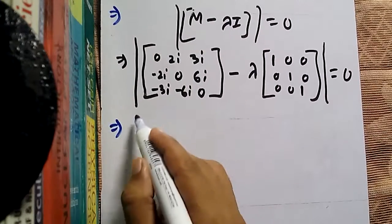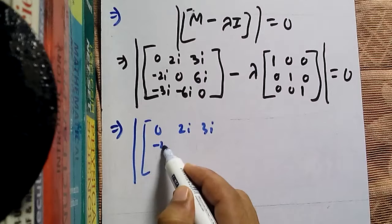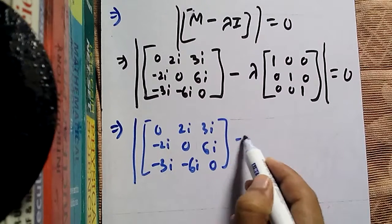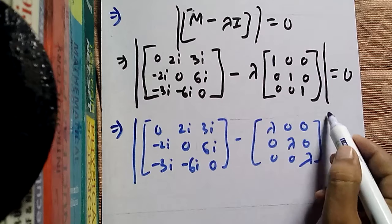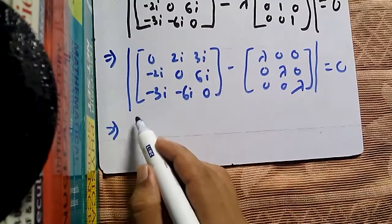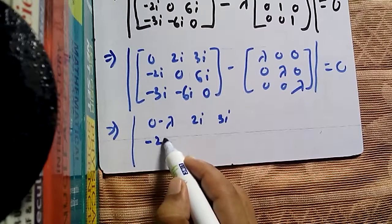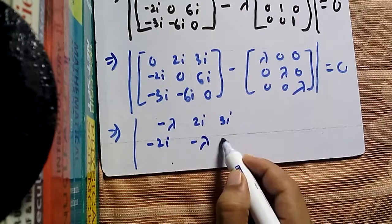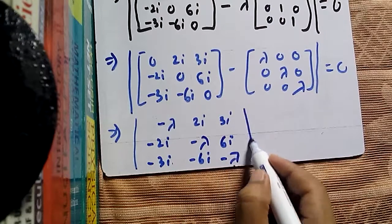Subtracting lambda times the identity matrix from M, we get the matrix: [-lambda, 2i, 3i; -2i, -lambda, 6i; -3i, -6i, -lambda]. We then set its determinant equal to zero.